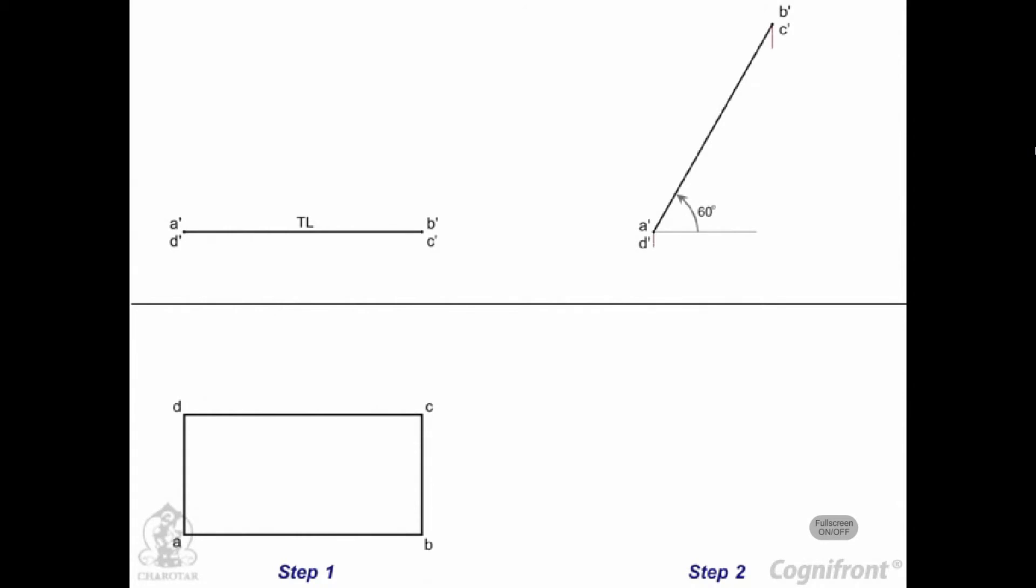Draw vertical lines from the ends of line A dash D dash and B dash C dash to intersect horizontal lines drawn from the top view A, B, C, D at points B1, C1, D1 and A1.